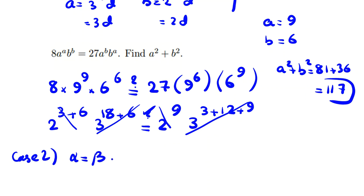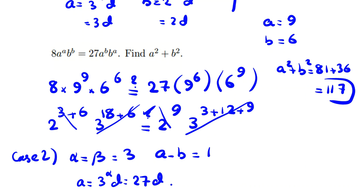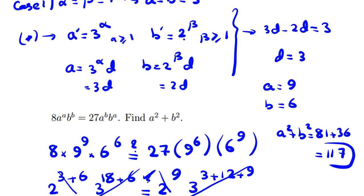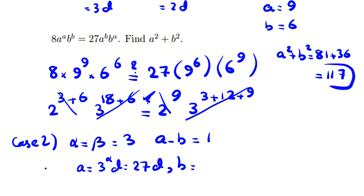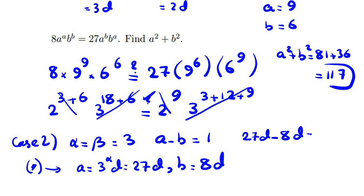Case 2: α equals β equals 3 and a−b equals 1. Then a equals 3^3·d equals 27d and b equals 2^3·d equals 8d. Substituting into a−b equals 1: 27d minus 8d equals 19d equals 1. Since d must be a positive integer, 19d cannot equal 1. This is a contradiction, so Case 2 yields no valid solutions.